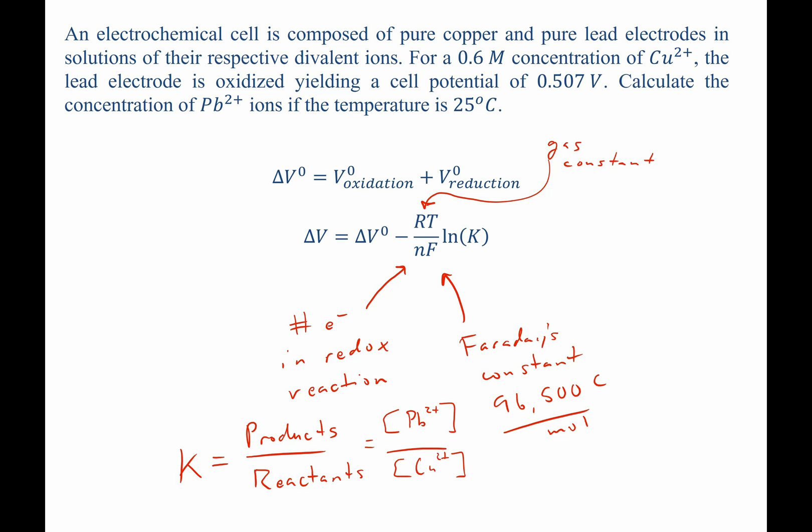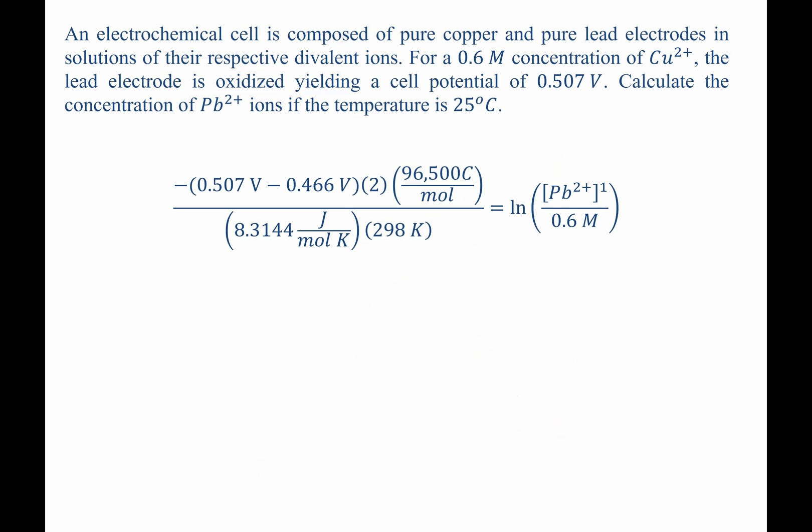Now let's plug it in. Solving for lead 2 plus is simple. We take exponential of both sides of this expression. I find that the concentration of lead 2 plus ions equals 0.6 molar times the exponential of negative 3.1937, which equals 0.0246 molar. So we've solved for the concentration of lead 2 plus ions.